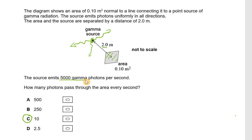The source emits 5,000 gamma photons per second. How many photons pass through the area every second? Well, we can think of that area as lying on a sphere that has a radius of 2 metres from that source.